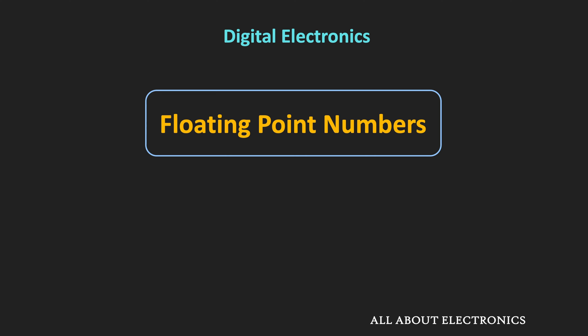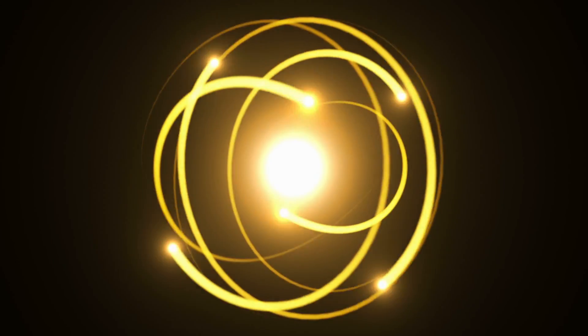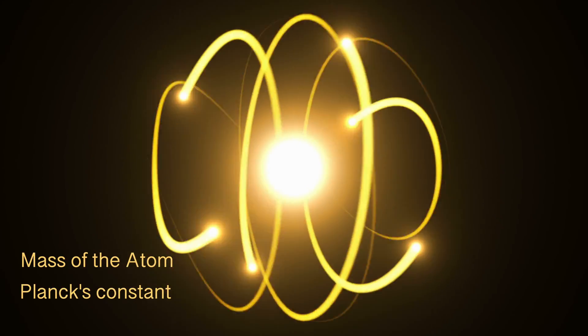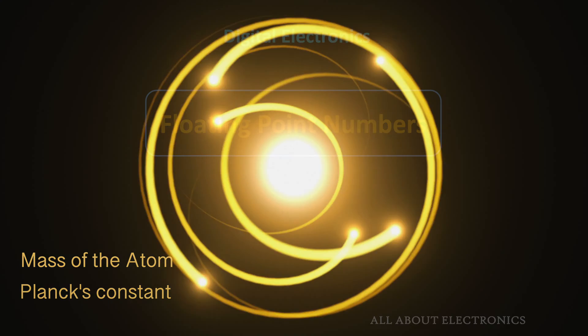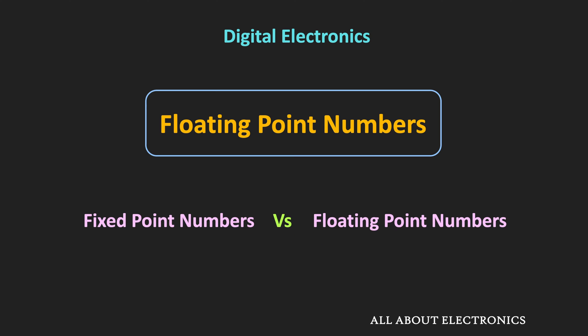Hey friends, welcome to the YouTube channel all about electronics. In this video, we will learn about floating point numbers, and we will see how very large numbers like the mass of the planets or Avogadro's number, and similarly very small numbers like the mass of the atom or Planck's constant, are stored in computers. We will also see the difference between fixed point numbers and floating point numbers, and understand the importance of floating point numbers in digital systems.